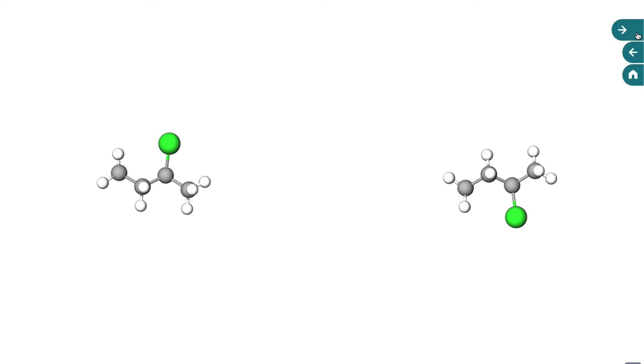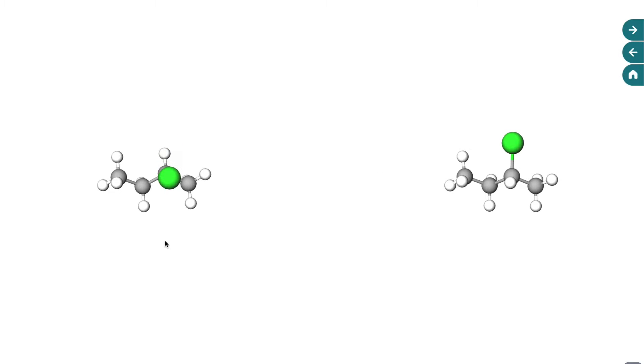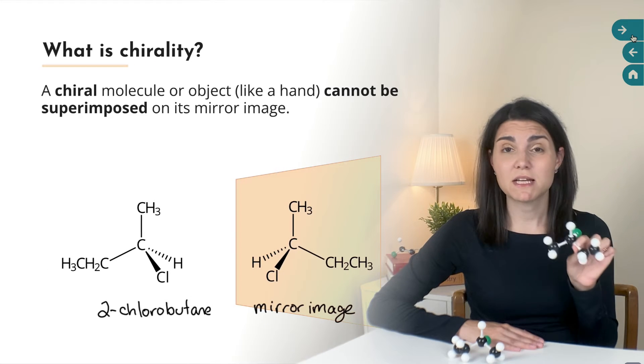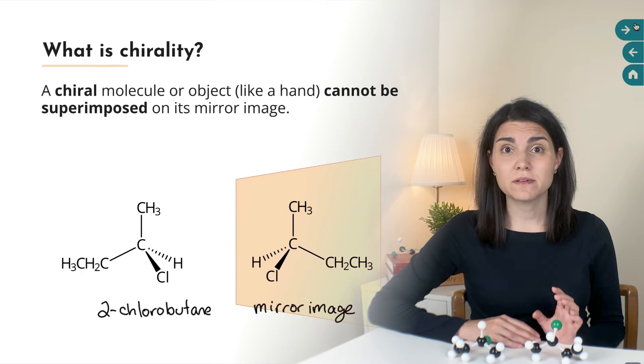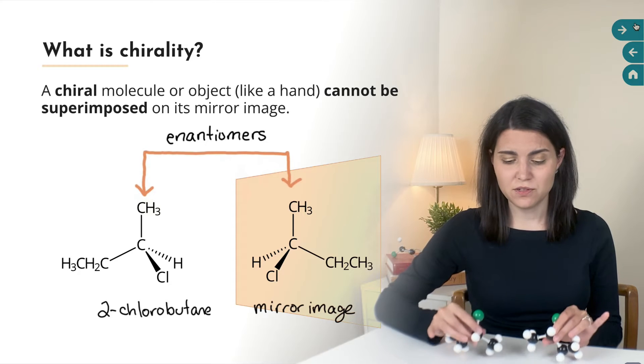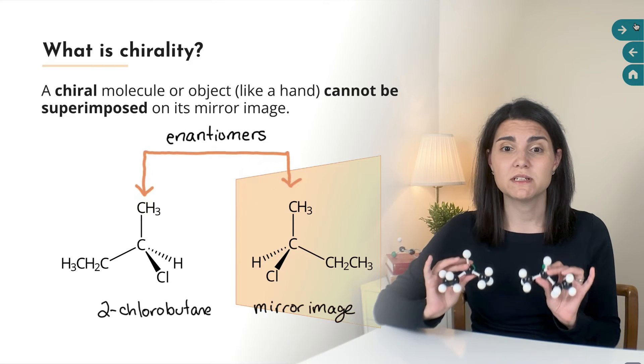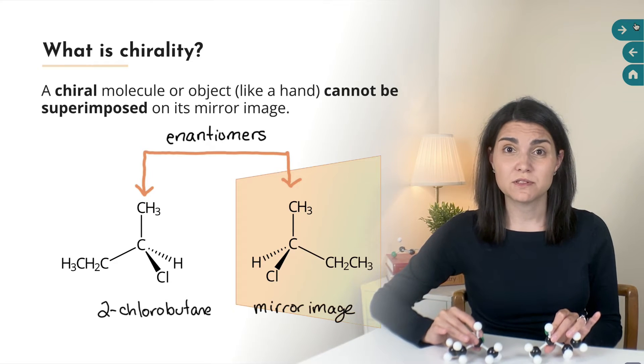So in case you don't believe me give it a try yourself. Here are the same two molecules. They are mirror images of each other and no matter how you twist them around you can't make them line up and look exactly alike. So because 2-chlorobutane can't be superimposed on its mirror image we say that 2-chlorobutane is chiral and we use a special word to describe the relationship between these two non-superimposable mirror images. We call them enantiomers of one another.